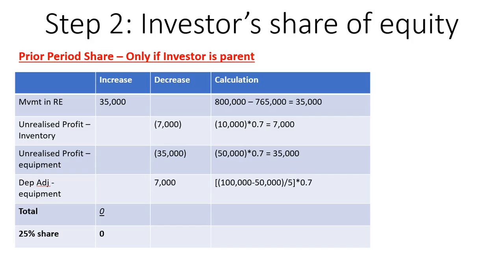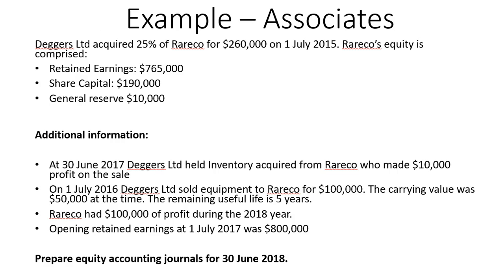Now we need to look at our prior period share, which is only relevant if the investor is a parent. We know our movement in retained earnings: at the date of acquisition it was $765,000, and opening retained earnings at 1 July 2017 — the beginning of the current period, also the end of the prior period — was $800,000. So retained earnings increased by $35,000, and we should share in that increase in equity.